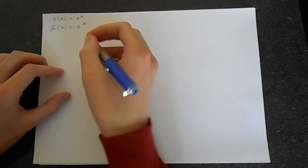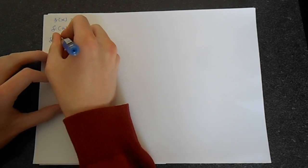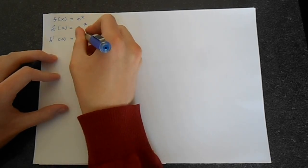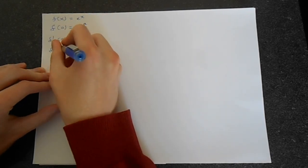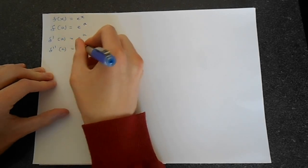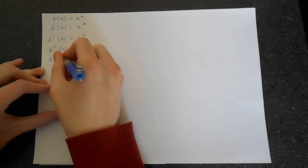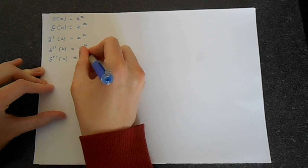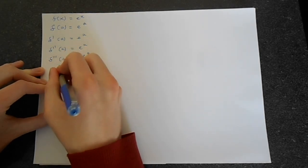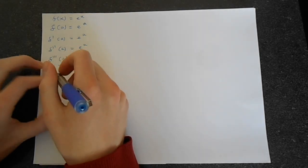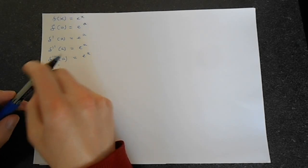Let's take all the derivatives. f dash of a is e to the a. f double dash of a is e to the a again. The triple derivative is e to the a. And all the way down, it's just always going to be e to the a.